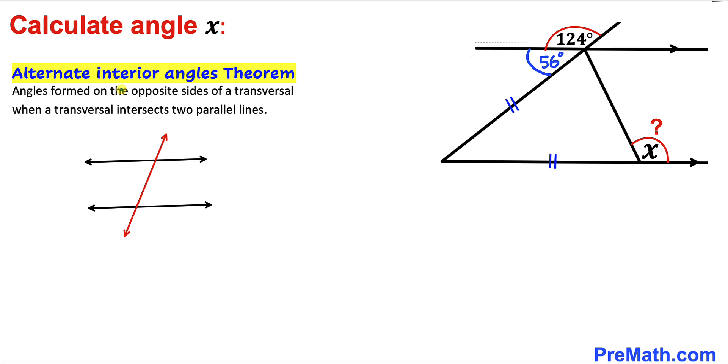Now let's recall the alternate interior angles theorem. Angles formed on the opposite side of a transversal when it intersects two parallel lines, as shown in this diagram, are alternate interior angles and they are congruent.